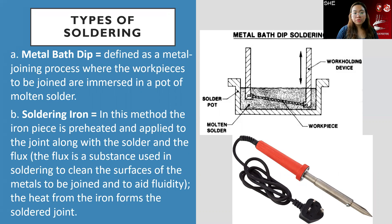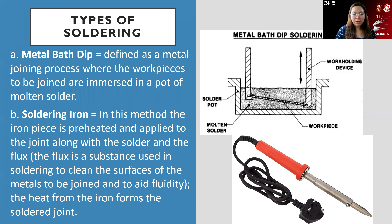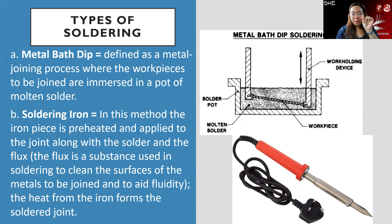There are different types of soldering. Metal bath dip is defined as a metal joining process where the work pieces are immersed in a pot of molten solder. Soldering iron involves preheating the iron piece and applying it to the joint — the common method most people know. The downside is the joints can look rough and uneven, especially if you are not experienced.